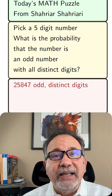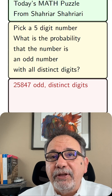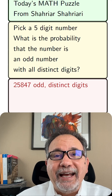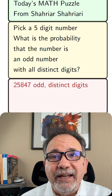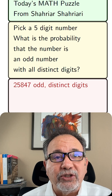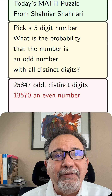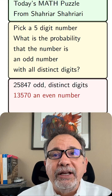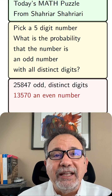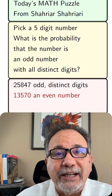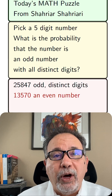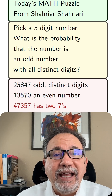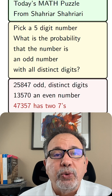Twenty-five thousand eight hundred forty-seven is an example of the kind of number we're looking for: it has five digits, it's odd, and it has distinct digits. It ends with a seven, which makes it odd, and no digit is repeated. Thirteen thousand five hundred seventy is not one we're looking for — it's an even number. Integers that end with a zero, two, four, six, or eight are even. We also don't want forty-seven thousand three hundred fifty-seven because the digit seven appears twice.